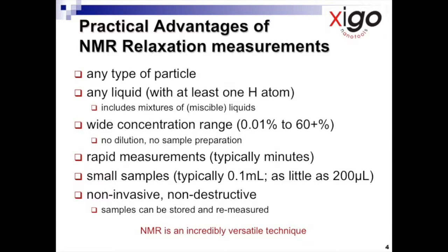Third, the solids concentration can be very high indeed. The limit is simply dictated by whether you can get the sample into an NMR tube. No dilution is necessary. Samples can be measured as they are prepared or used, and this is an industrially important benefit. The overall measurement time can be very fast.